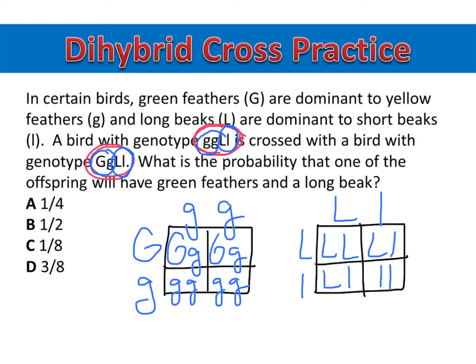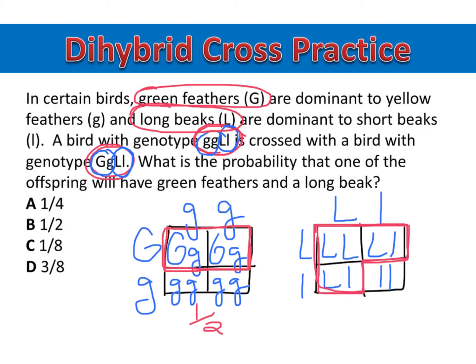Now let's look at our question. It wants to know the probability that one of the offspring will have green feathers and a long beak. So I'll be working with fractions. Green feathers is the dominant trait, and two of the four boxes have a dominant allele and would have green feathers, so two out of four is a half. Long beaks is also the dominant allele, and three of the four boxes received at least one dominant allele, so three of the four show offspring having long beaks.